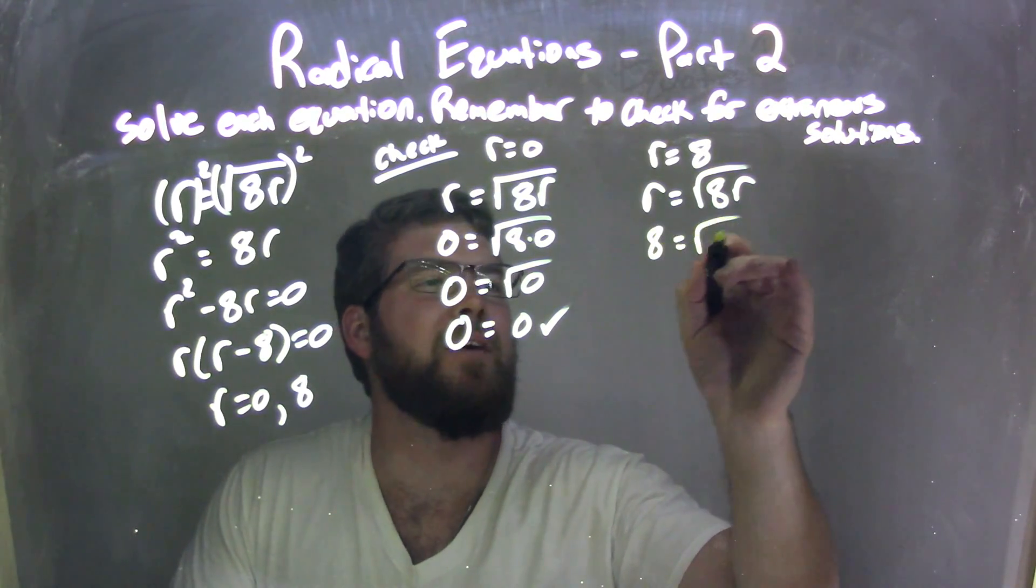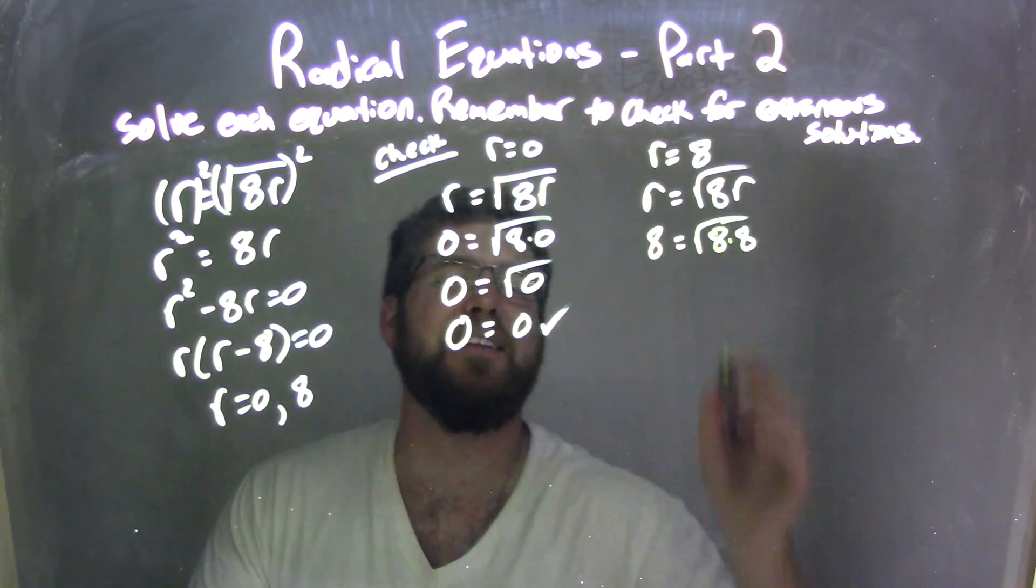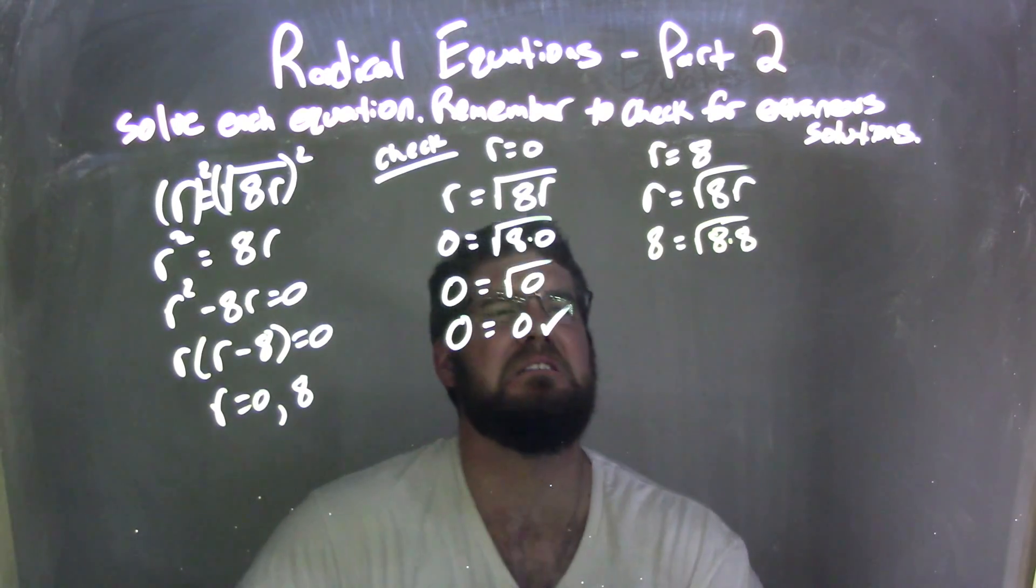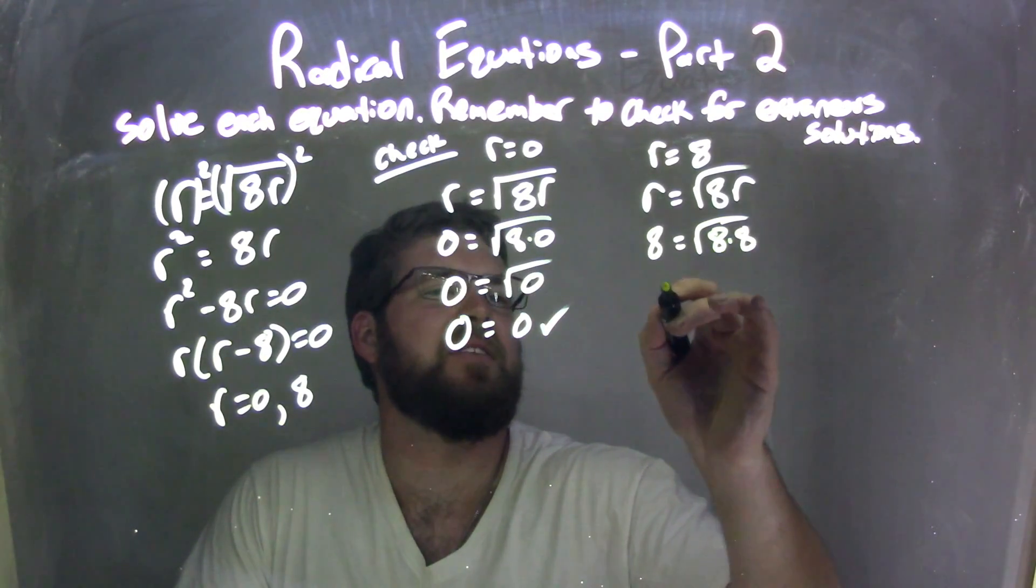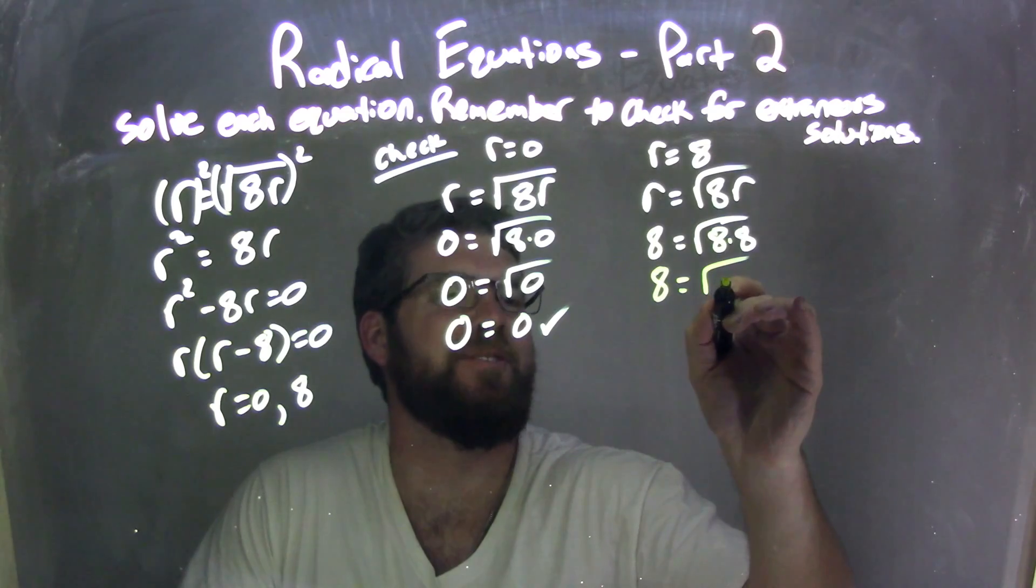There's 8s everywhere. 8 equals square root of 8 times 8. 8 times 8 is 64, so 8 equals square root of 64.